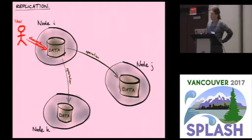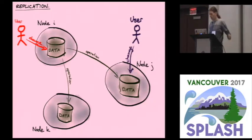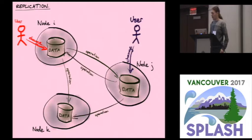Where we start diverging from consensus is that we allow different users on different nodes to change the data concurrently. The purple user might come along and walk up to node J and make some change that is independent and concurrent to the change made by the red user. This change then similarly needs to get replicated to the other replicas.